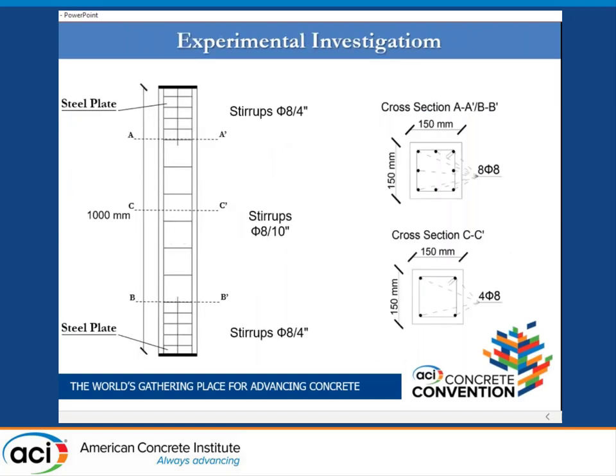The specimens adopted in the experimental campaign have a square cross-section equal to 150 millimeters wide and 1000 millimeters long. The specimens were reinforced with four longitudinal 8-millimeter diameter steel bars along the entire column height. The concrete cover was 20 millimeters. The shear reinforcement consists of 8-millimeter diameter stirrups spaced at 100 millimeters center to center in the test range, in order to avoid end effects at the top and bottom of the column.